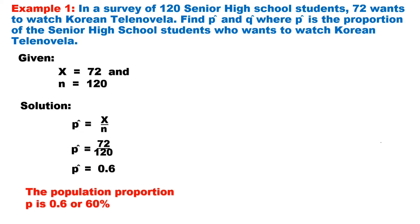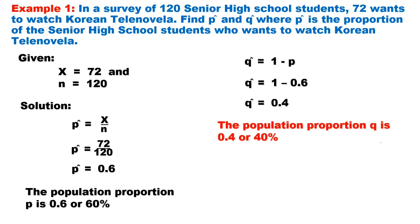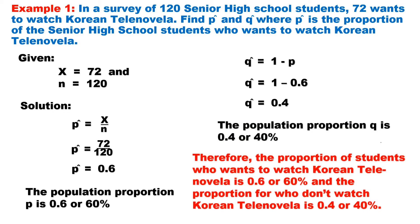It means that the population proportion P is 0.6 or 60%. To solve for Q-hat, use the formula 1 minus P. Substituting P with 0.6: 1 minus 0.6 equals 0.4. It means the population proportion Q is 0.4 or 40%. To interpret the result, the proportion of students who want to watch Korean telenovela is 0.6 or 60%, and the proportion who don't want to watch is 0.4 or 40%.